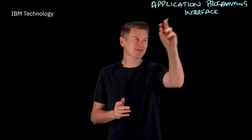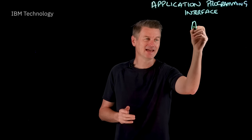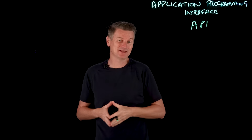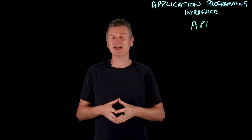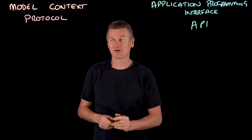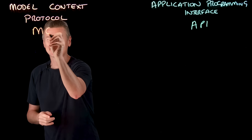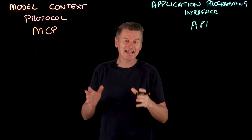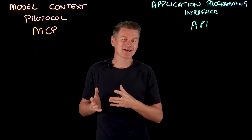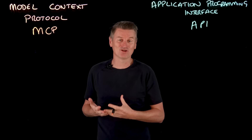For large language models to be truly useful, they often need to interact with external data sources, services, and tools. Until recently, that was typically done with application programming interfaces, or APIs. Now, in late 2024, Anthropic introduced a new open standard protocol called Model Context Protocol, or MCP, and it has already made quite the splash. It standardizes how applications provide context to LLMs.